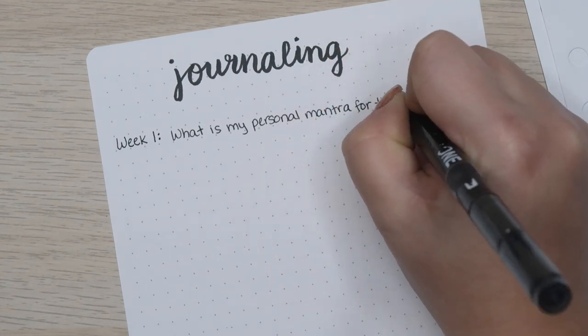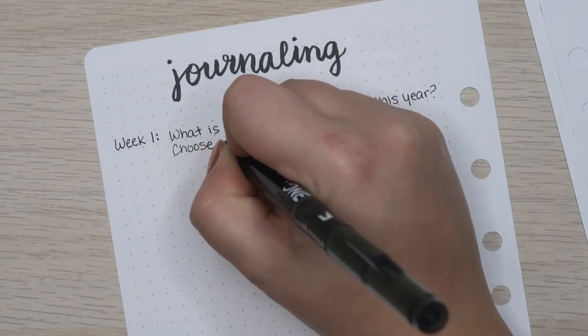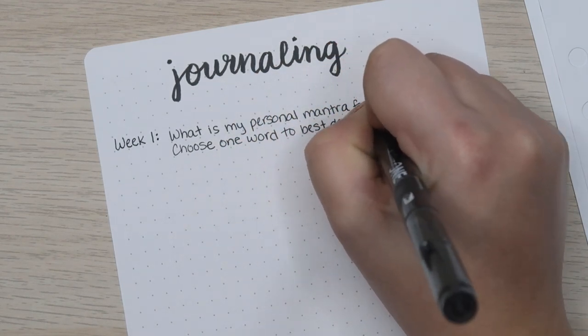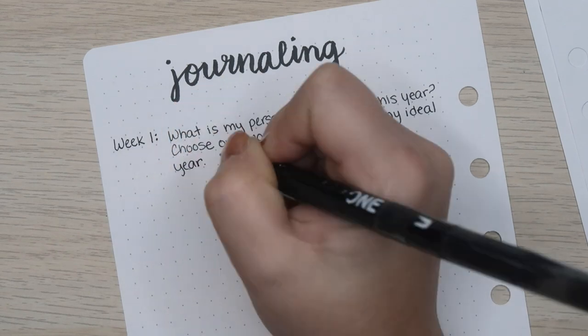Because I knew I couldn't fit 52 prompts on two pages, I kind of made this little Dutch door situation in the middle. And just like with the crystals, I'm not going to fill this out on camera, but you'll see the finished product in the flip through.